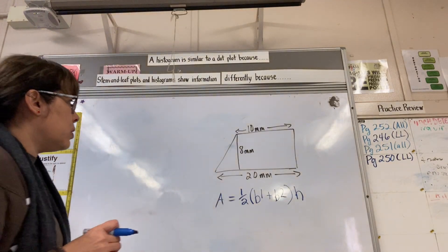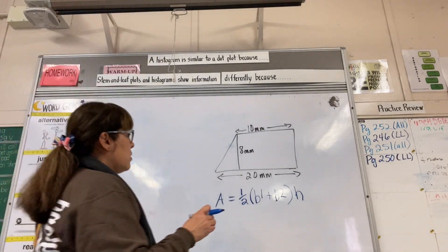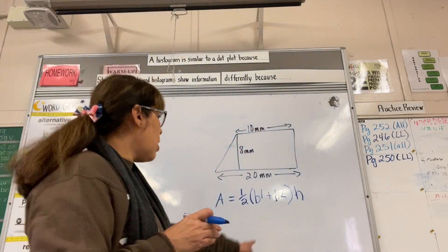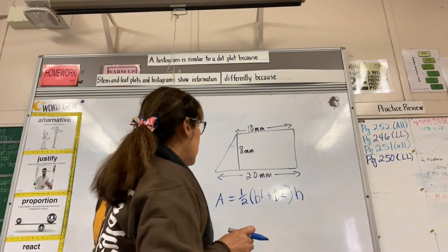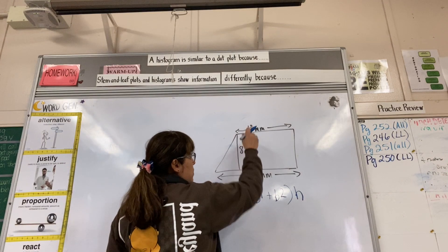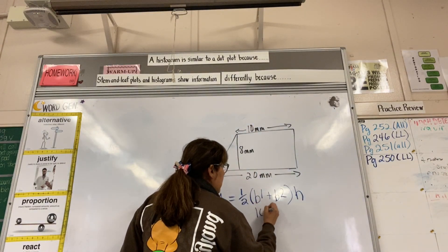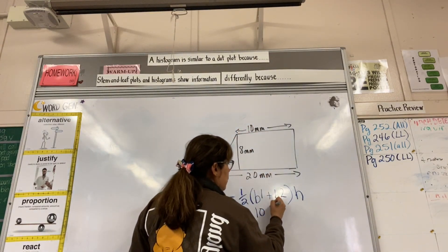We're going to do this step by step. Remember the rule of order of operations - you start with the parentheses. So we'll start with the parentheses first. Base 1 is 10, base 2 is 20.